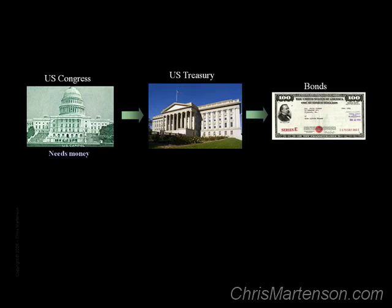A bond has a face value, which is the amount it will be sold for, and it has a stated rate of interest that it will pay to the holder. So if you bought a bond with $100 face value and that paid a rate of interest of 5%, then you'd pay $100 for this bond and you'd get $105 back in a year. Treasury bonds are sold regularly in auctions, and it's safe to say that the majority of these bonds are bought by big banks, such as those of China and Japan recently.